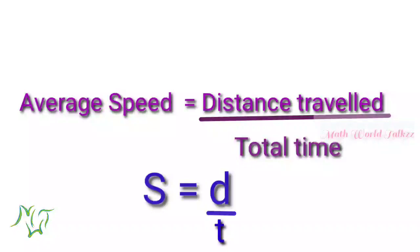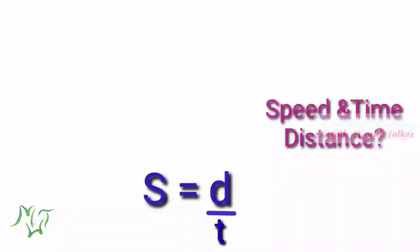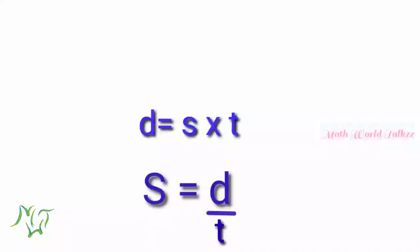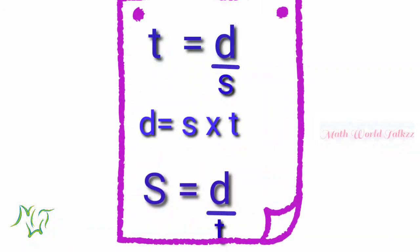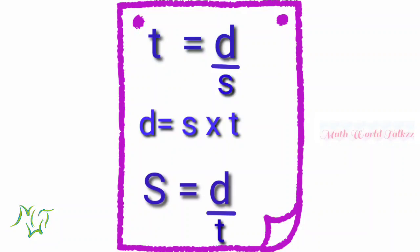In short, we can say S is equal to d by t. So if speed and time are given, distance d is equal to S into t. If distance and speed are given, time t is equal to d by s. These are all the formulas connecting time, distance and speed.